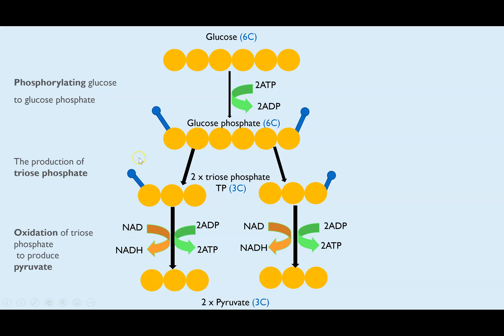In biological biochemistry reactions, if you see a molecule gaining hydrogen, that is an example of reduction, because a hydrogen atom is a proton and an electron. So NAD has technically gained an electron. The other thing to note at this stage is that the oxidization of triose phosphate into pyruvate does release two molecules of ATP.